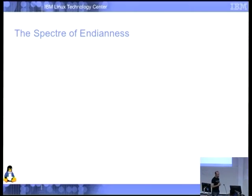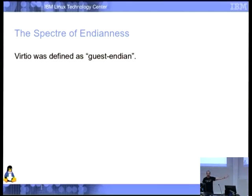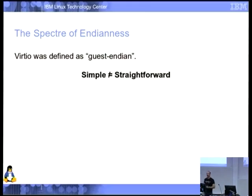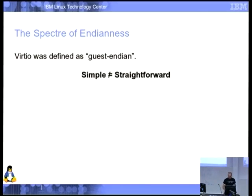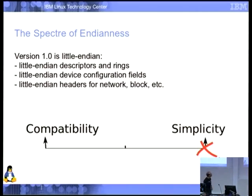The worst change: endianness. VirtIO was originally defined as guest-endian — I thought, you're writing a guest driver, don't worry about endianness, the host obviously knows what endian you are. It turns out simple is not the same as straightforward. Not only did this cause an FAQ, but the balloon driver got it wrong and we had to add a note saying they're not always little-endian despite the convention. So: little-endian everywhere. Little-endian for the descriptors, the rings, everything. Simplicity for the win.